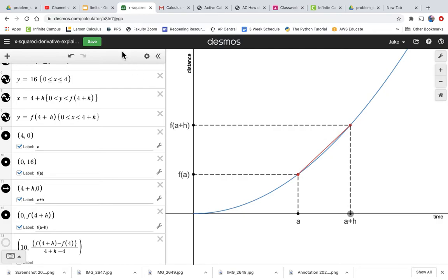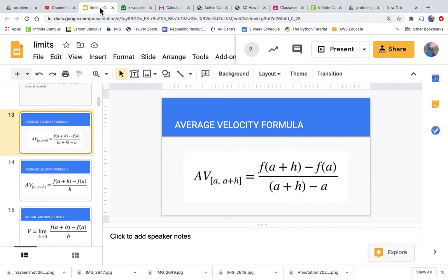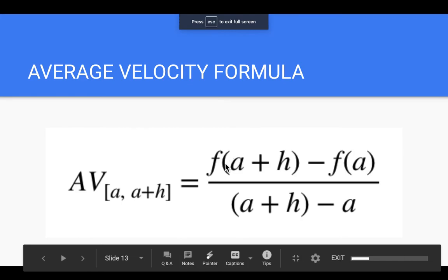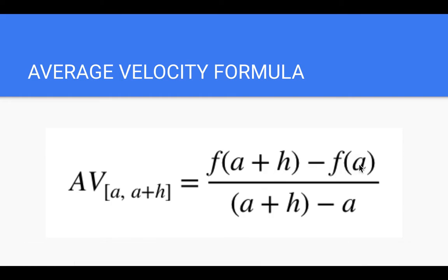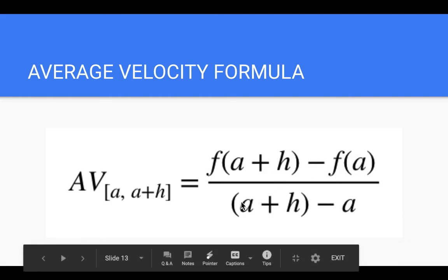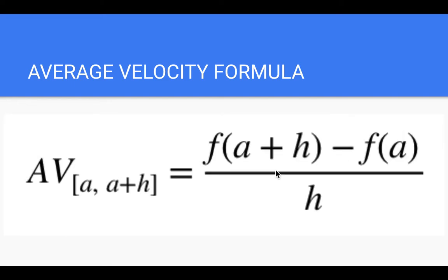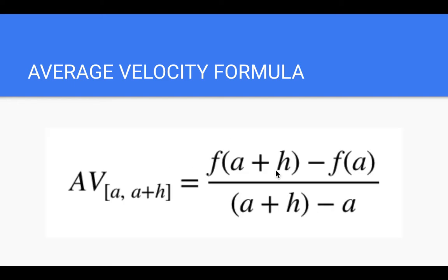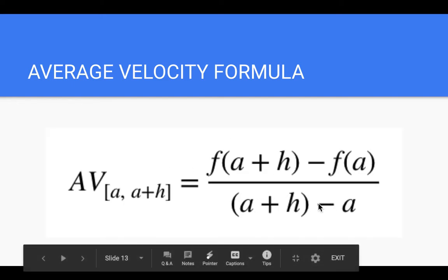standard average velocity function. So we can look at it like this: our average velocity would be y₂, which is f(a + h), minus y₁, which is f(a), over x₂, which is a + h, minus x₁, which is a. And hopefully you see that—a minus a...